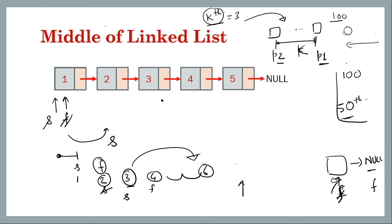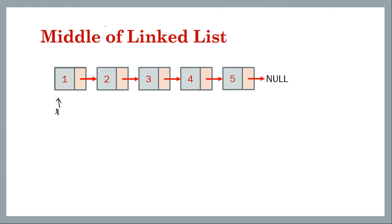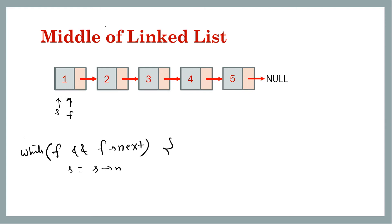We stop when fast becomes null or fast's next becomes null. Whatever slow is pointing to will be the middle. If there are 100 nodes, slow will be at roughly 50 because fast takes two steps for every one step of slow. So we can run through it: slow and fast both start at head, and the loop condition is while fast is not null and fast's next is not null, move slow by one and fast by two.